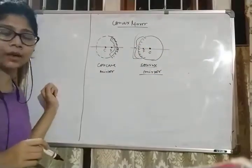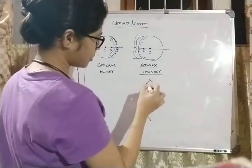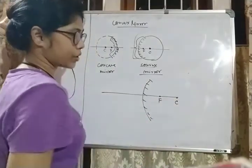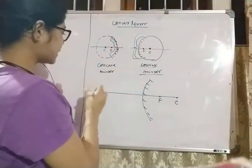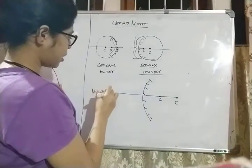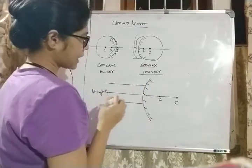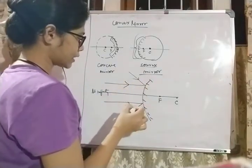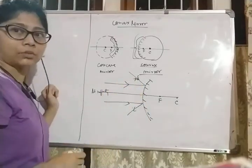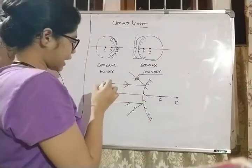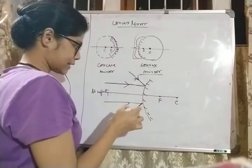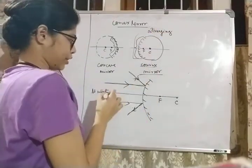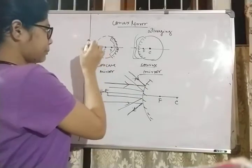When we draw ray diagrams for convex mirror, we draw it on this side. Suppose the object is at infinity — the rays will come this way, and after reflection they will deflect. The rays move towards the focus. After parallel rays hit, it diverges like this. Why is it diverging? Because these are diverging mirrors. But the concave mirror is a converging mirror.